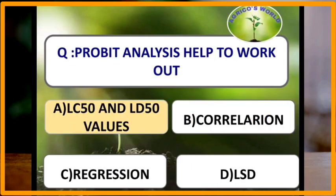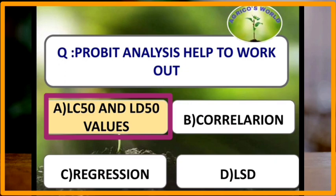Probit analysis helps to work out LC50 and LD50 values. LD50 is the lethal dose — the amount of toxicant required to kill 50 percent of the test population, expressed in milligrams of toxicant per kilogram body weight of the test animal. LC50 is the median lethal concentration, expressed as percentage of toxicant required to cause 50 percent kill, usually determined by Potter's tower or probit analysis.